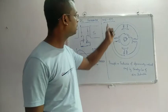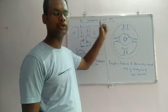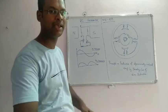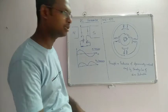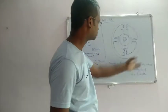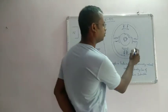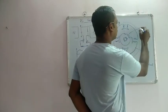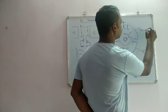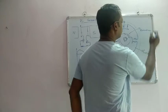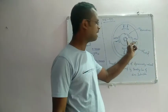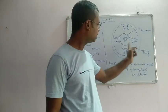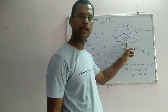The main parts required in a DC generator are: one, the field system, and two, the armature. The field system is stationary, while the armature is rotating.